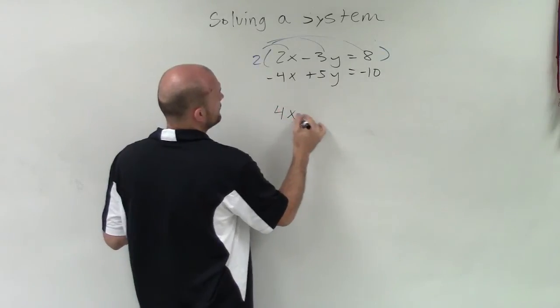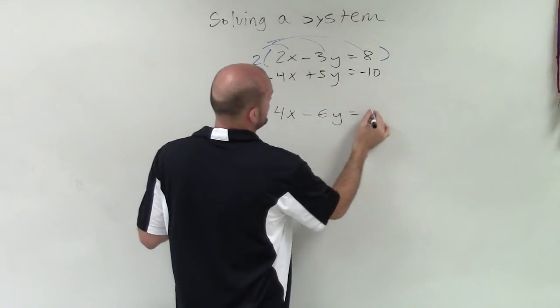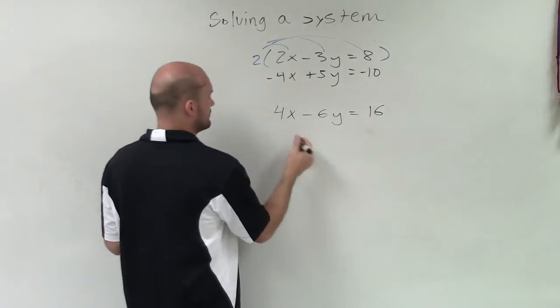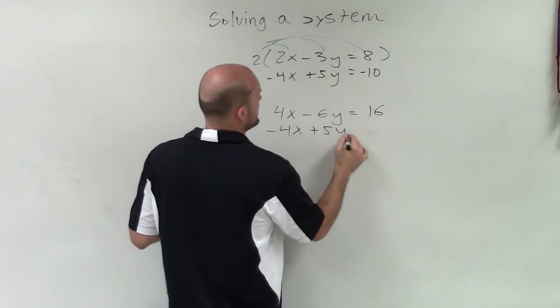So when I do that, I get 4x minus 6y equals 16. And then down below, I still have the same exact equation.